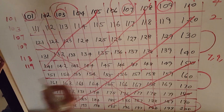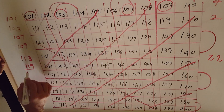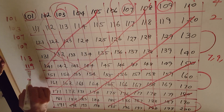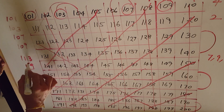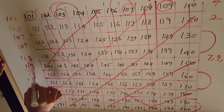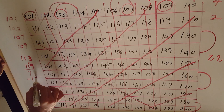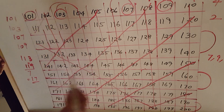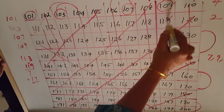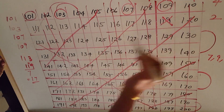Now check 119. You check with the 7 times table: 7×17 = 119 — 49, 77, 49 — so it is divisible. So 119 is not a prime number.